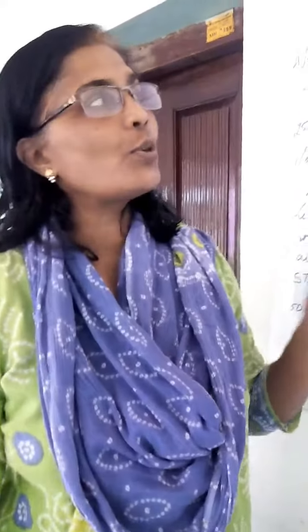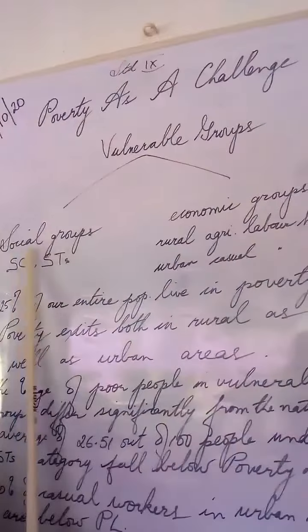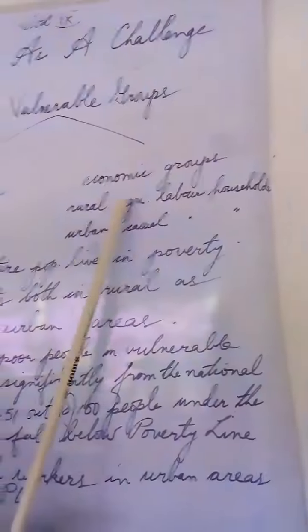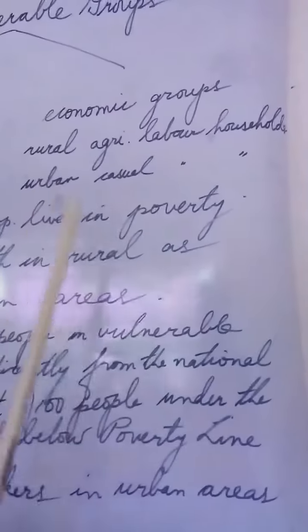The proportion of poor people who are below the poverty line among the different social groups and economic groups is not the same. These vulnerable groups are categorized as two: social groups and economic groups. In social groups, we include the Scheduled Caste and the Scheduled Tribe. Among the economic groups, we include the rural agricultural labour household and urban casual labour household.